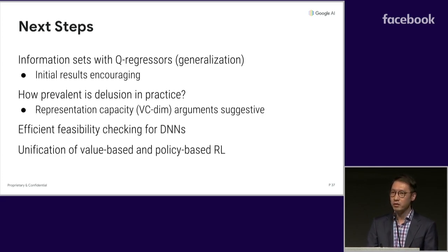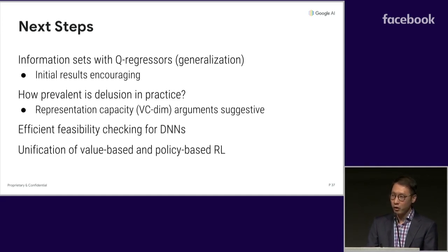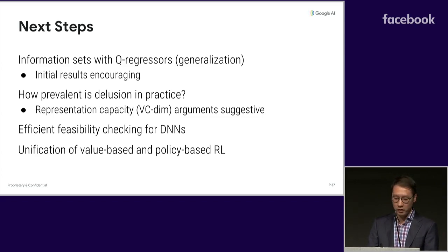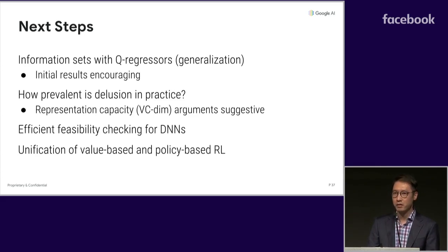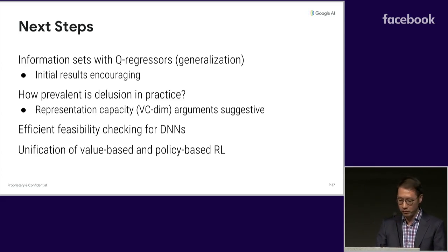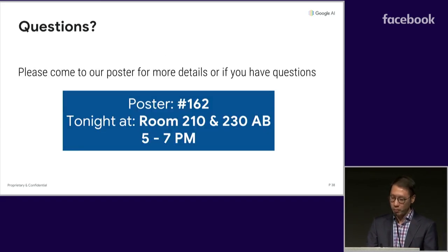Second, how prevalent is delusion in practice? Based on our preliminary experimental results, as well as arguments with respect to VC dimension on the size of the greedy policy class, we suspect it is quite prevalent. Third, how do we do efficient feasibility checking with large-scale DNNs? Lastly, we view our methods as bringing together value and policy-based RL in a very interesting way, and we'd like to explore that connection more deeply. So with that, I'll conclude — please come to my poster session tonight. Thank you, questions.